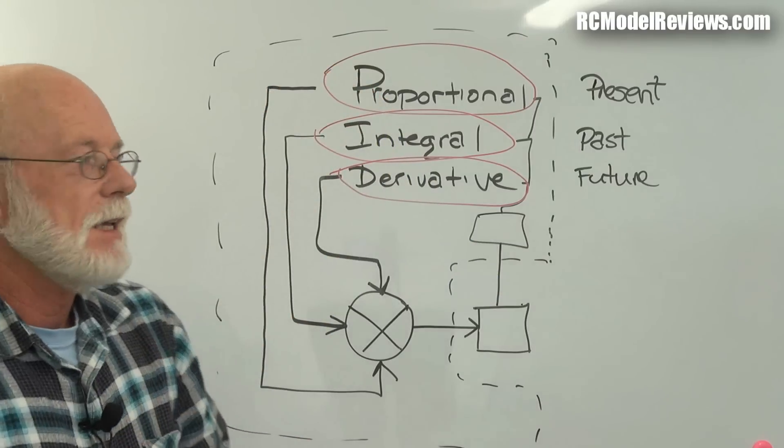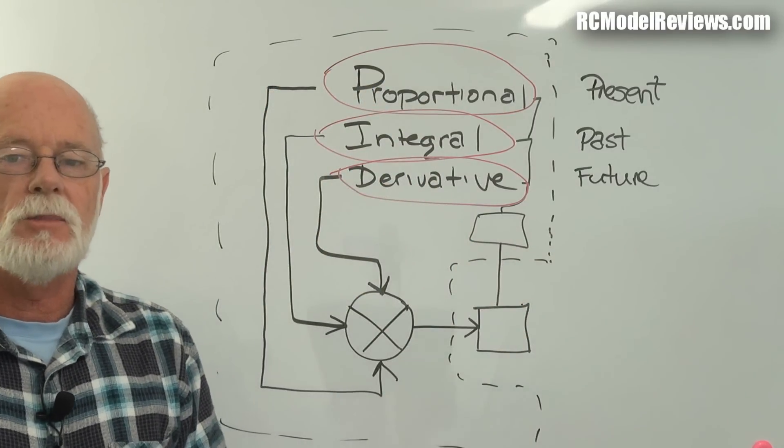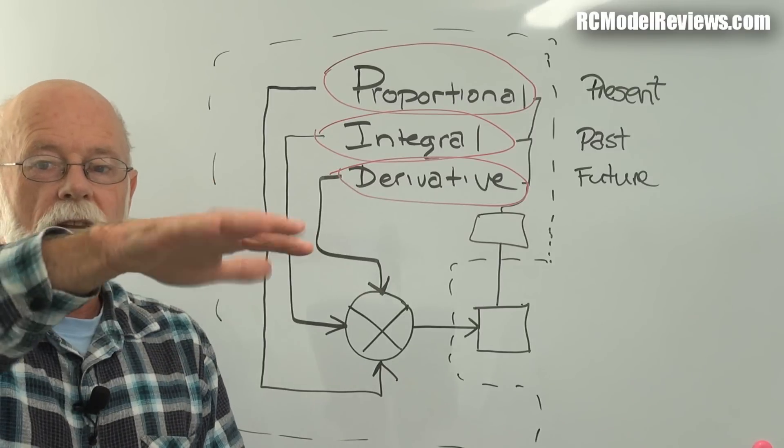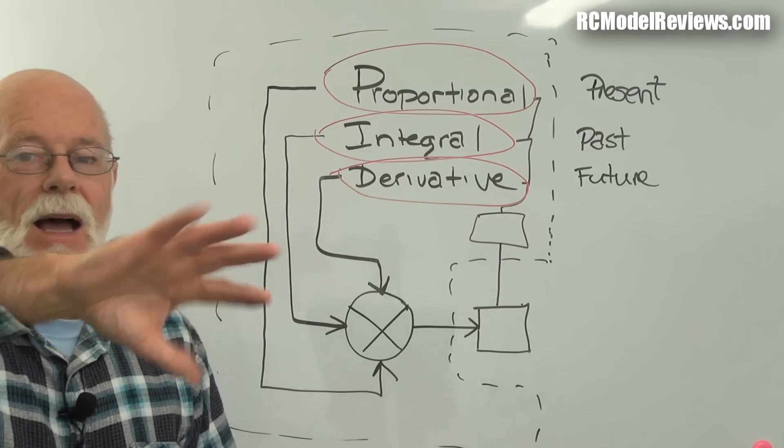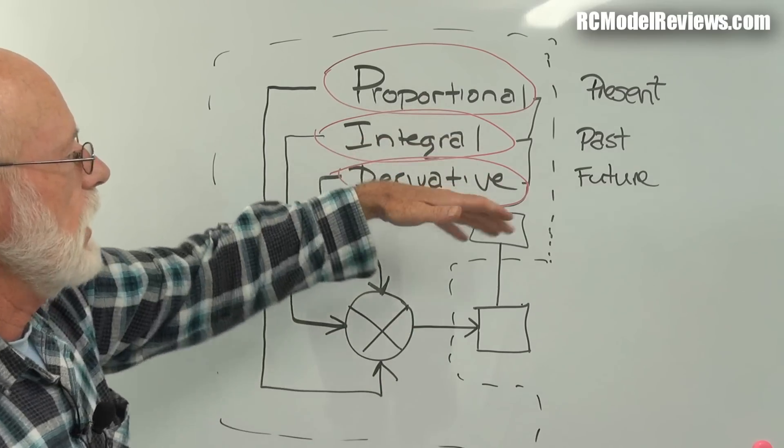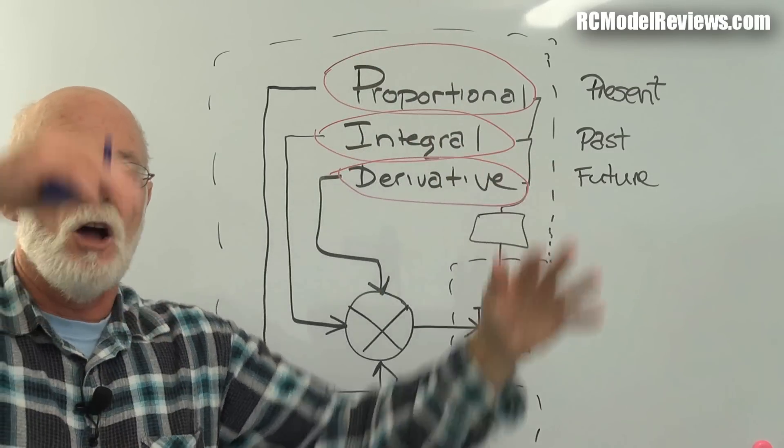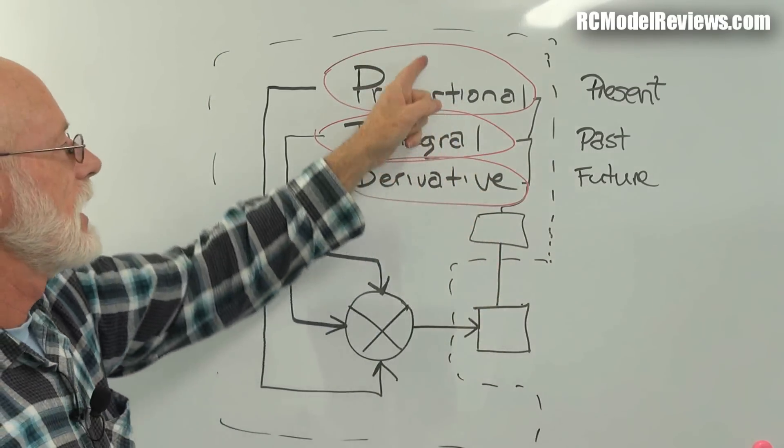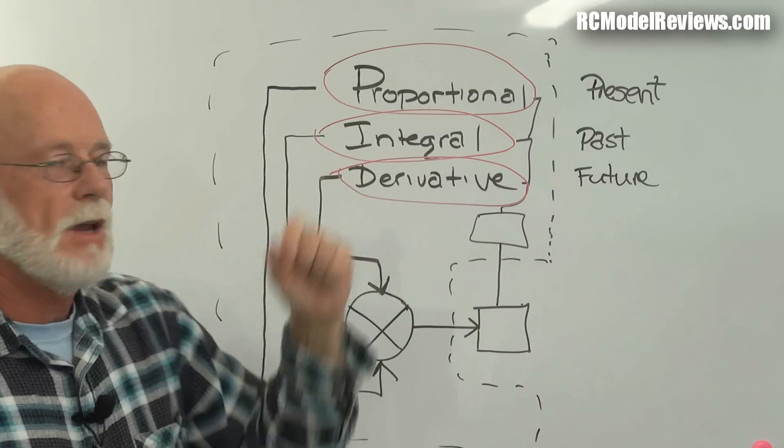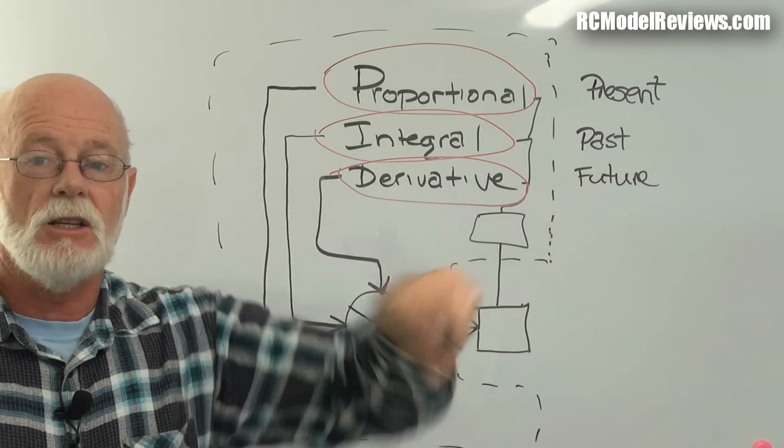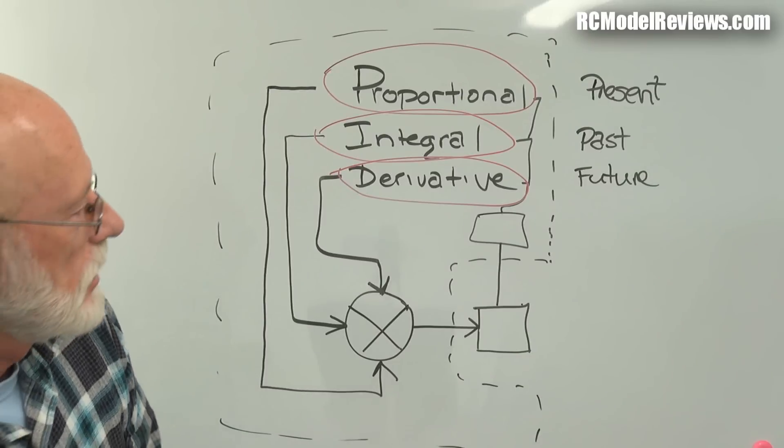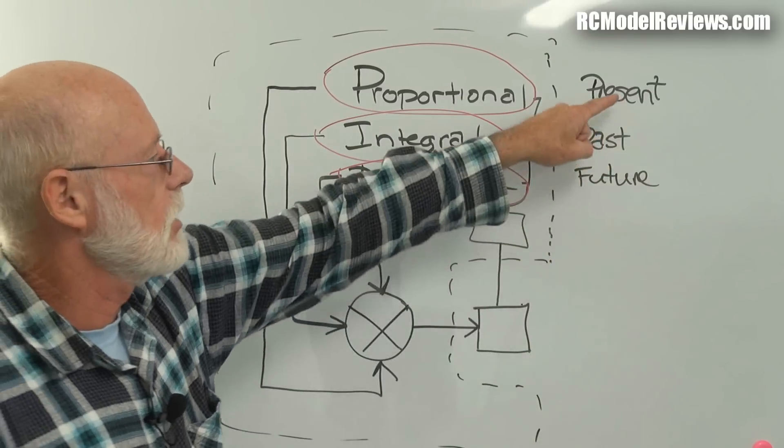And if you have the proportional, the P on your flight controller turned up too high, your quadcopter will oscillate too. Because it's yo-yoing past, because it's not anticipating the fact it's going to go back to the correct position, and it overshoots, and you get the oscillation. The higher the gain, the more proportional feedback you have, the worse that oscillation. If it's too bad, it'll just flip, because it goes way past the point of no return.